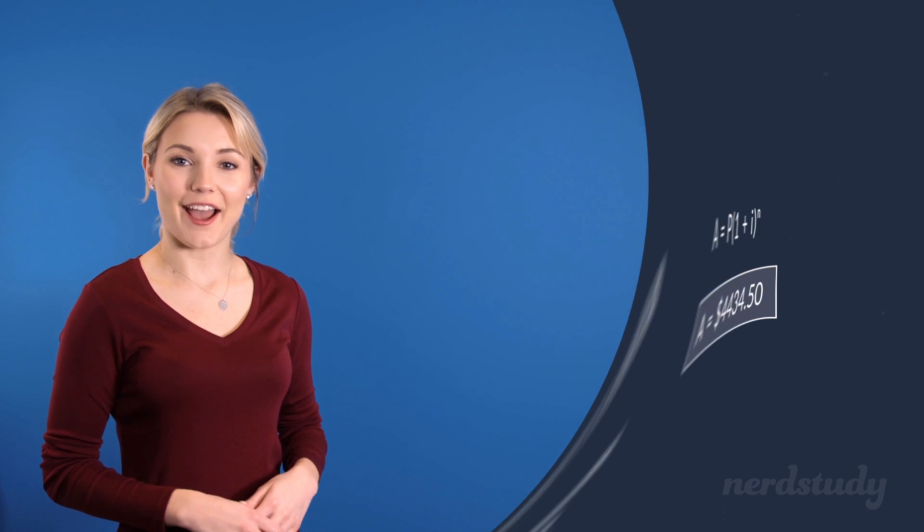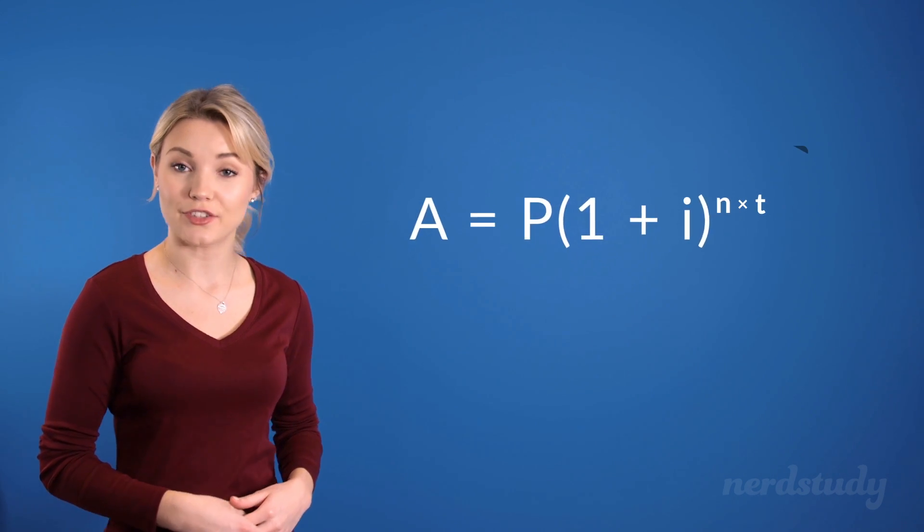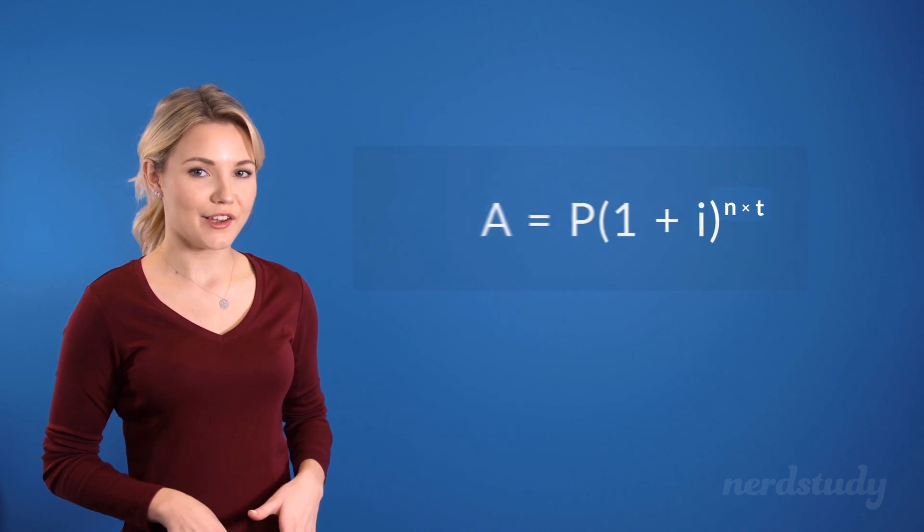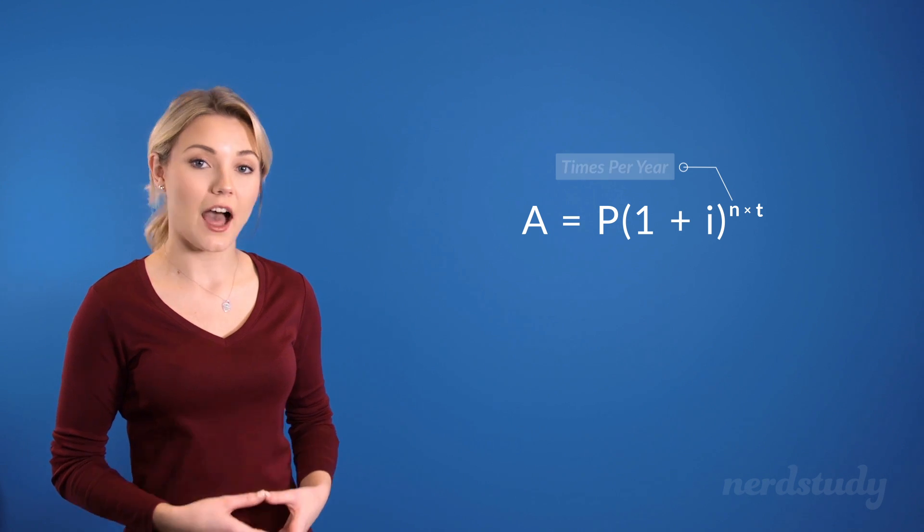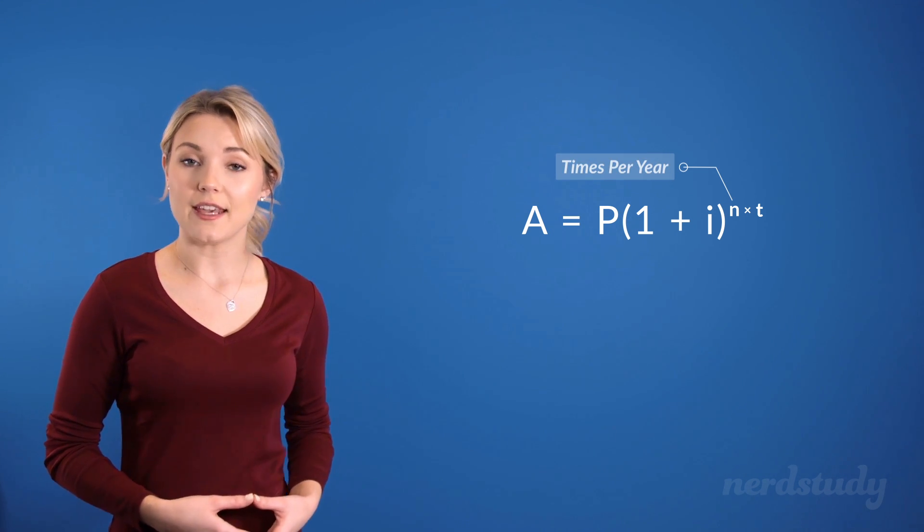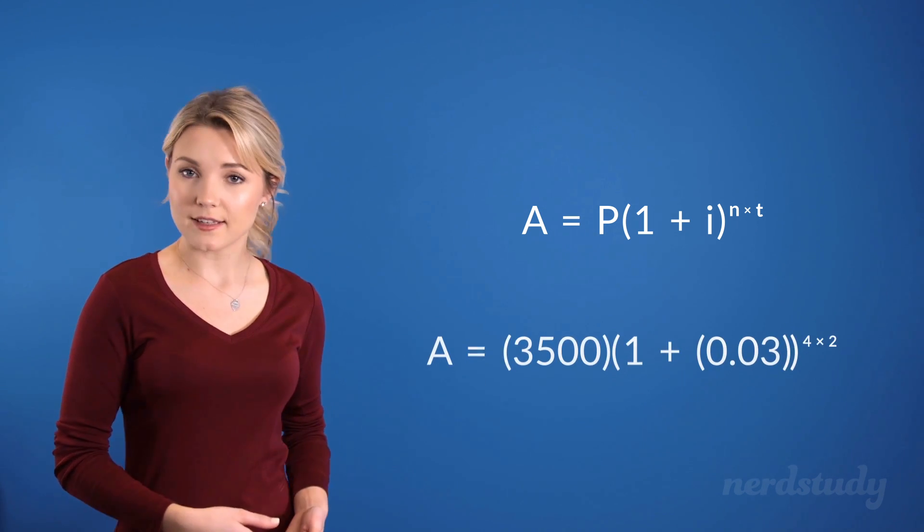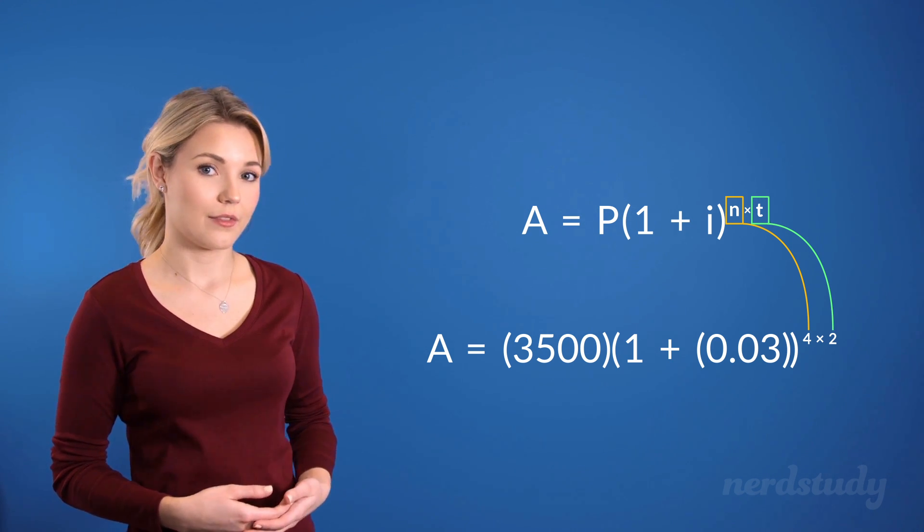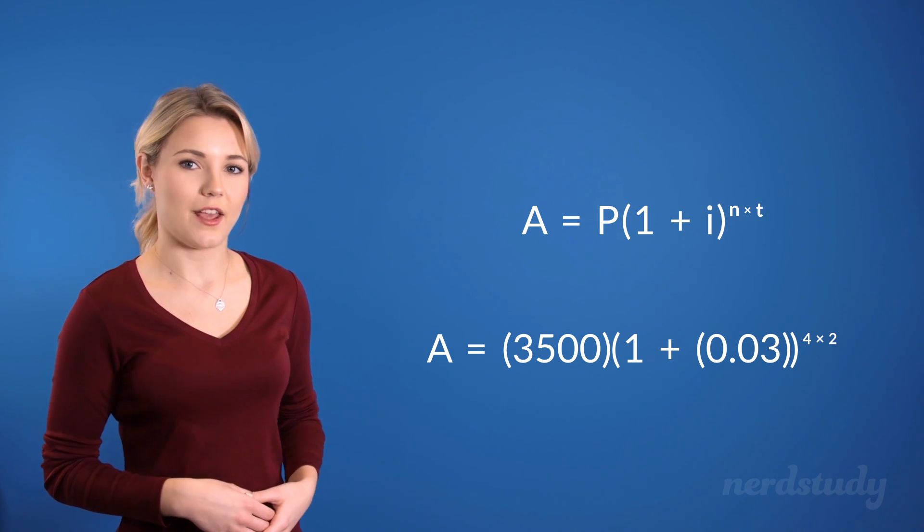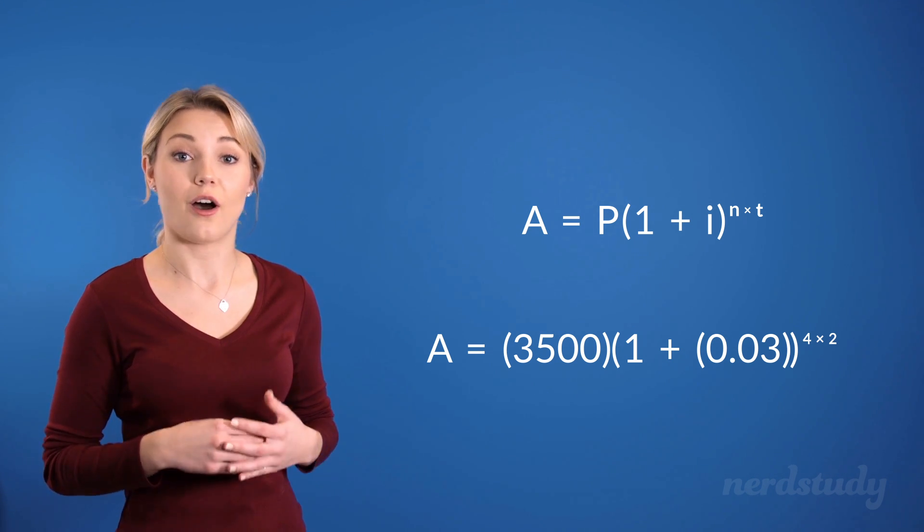Great! Now, before we finish this lesson, I do want to note that some formulas will write N times T like so. To avoid any confusion, the N in this case would just represent the number of times per year, while the T would represent the number of years. So, in our last example, our N would be 4, while our T would be 2. The way we've taught it in this video, however, is to just treat the N itself as the total number of terms altogether.